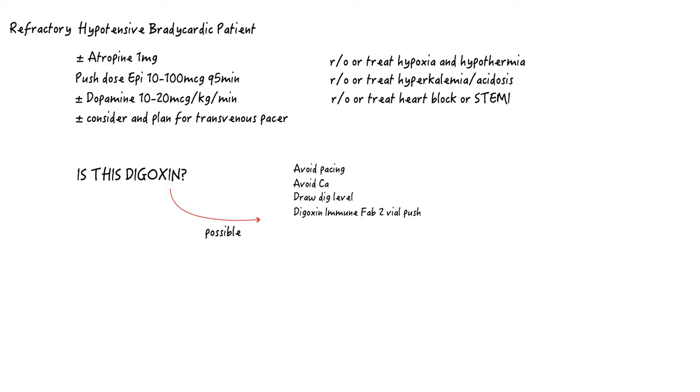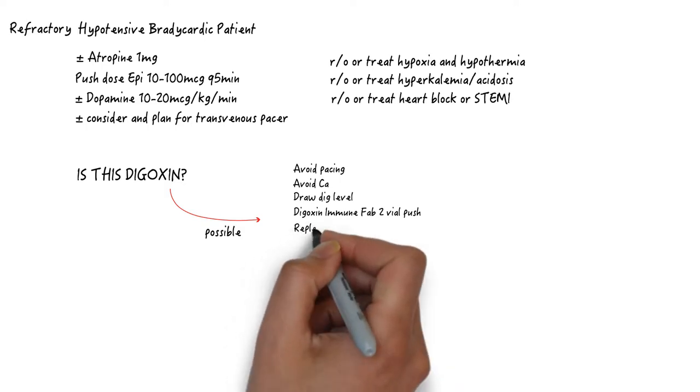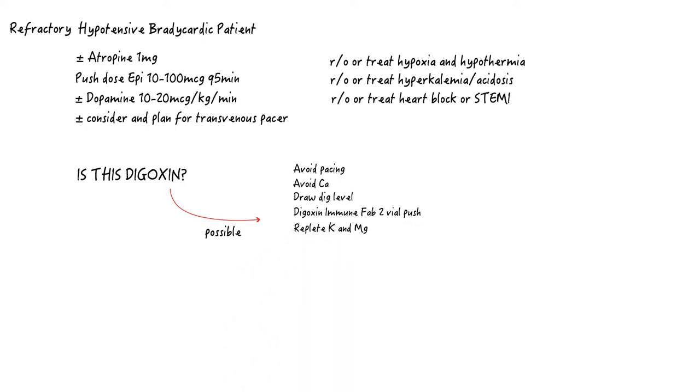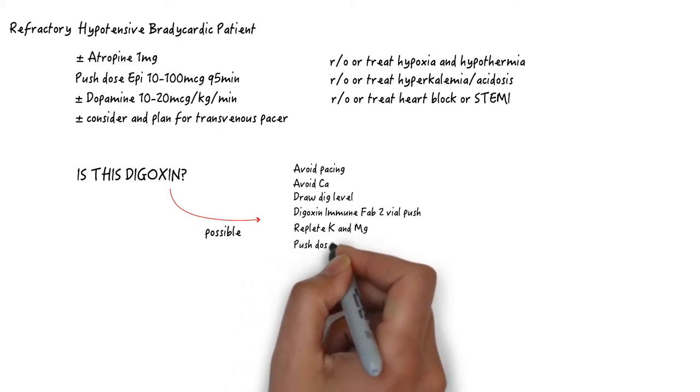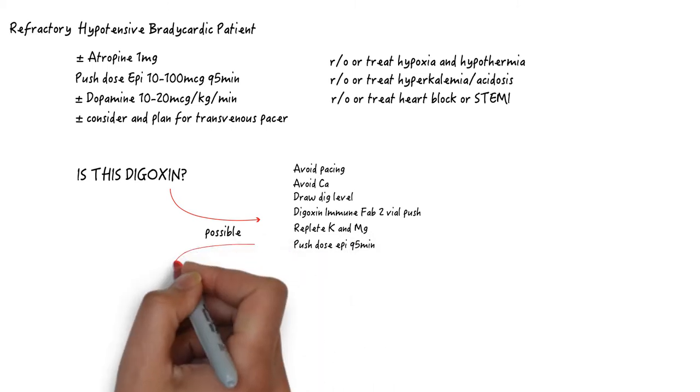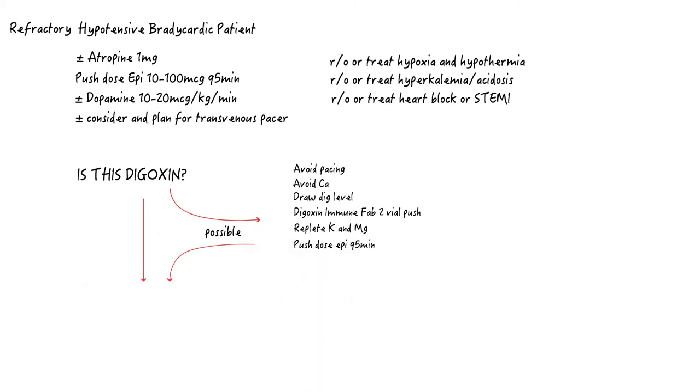The other thing about digoxin overdose is that hypokalemia can potentiate its toxic effects. Supplement potassium and magnesium. It will take 15 to 30 minutes for digoxin immune fab to take effect. So continue to use push dose epi and move on to the next treatment pathway.